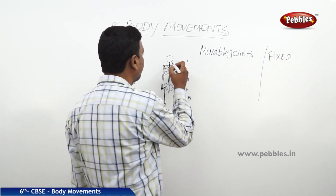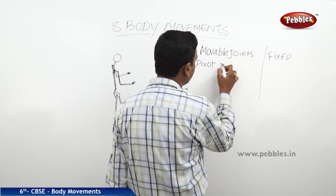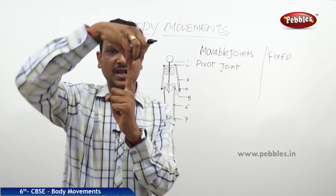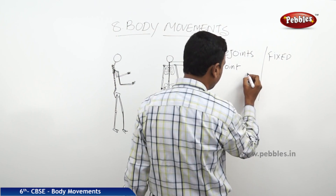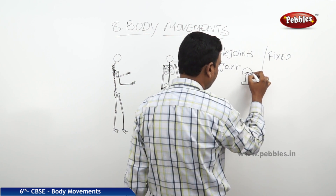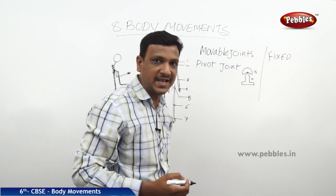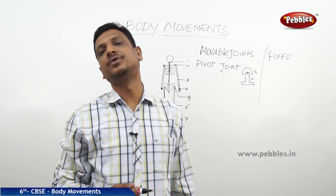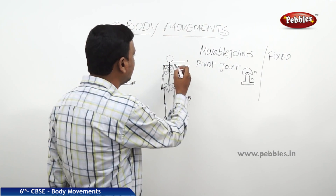The joint found between the head and neck is the pivot joint — a type of movable joint. A pivot is a point on which another part of the joint is fixed, allowing it to rotate. Part B rests on Part A and is allowed to rotate up to some extent. You can bend and rotate your head because of the pivot joint.